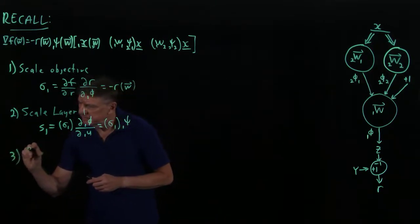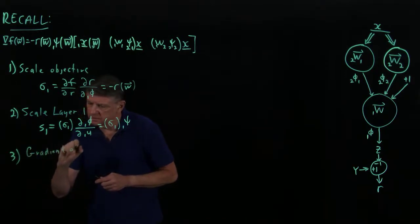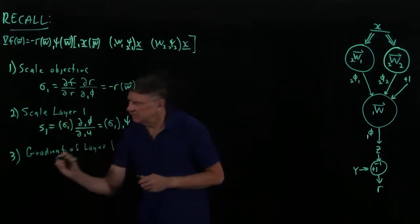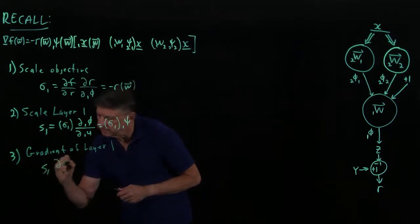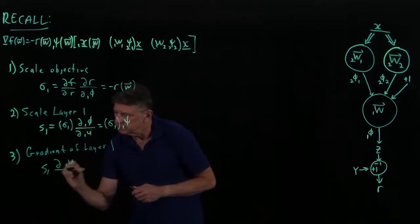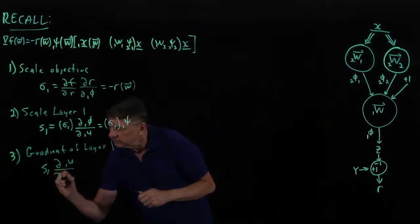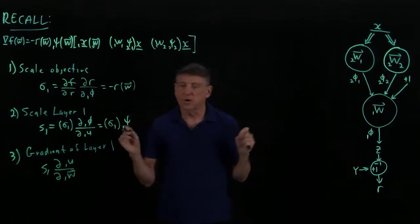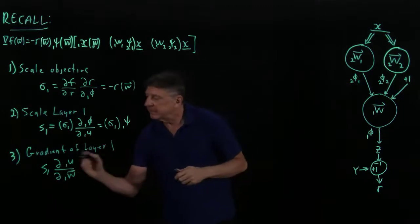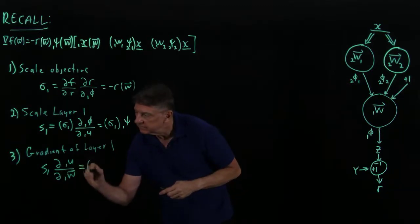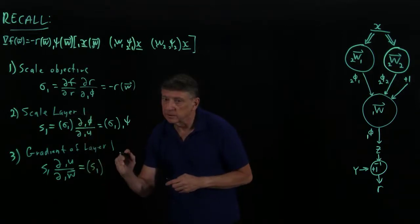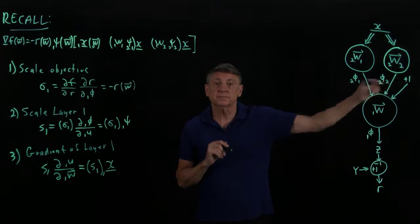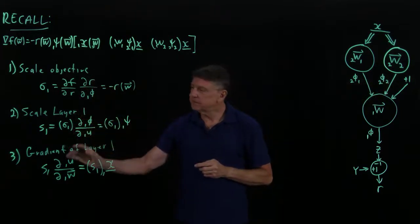The next term for layer one is we have to find the gradient. The gradient of layer one is this scale factor times the derivative of the linear response of this neuron with respect to its weight vector, and because that product is just its input times w, its derivative is simply the scale factor that layer one sees times the input to layer one. That's our layer one computation.